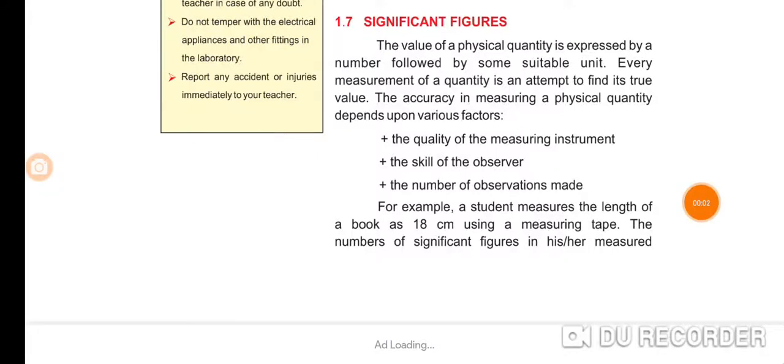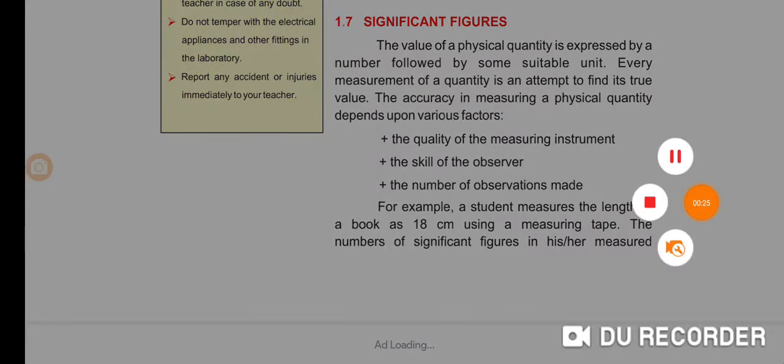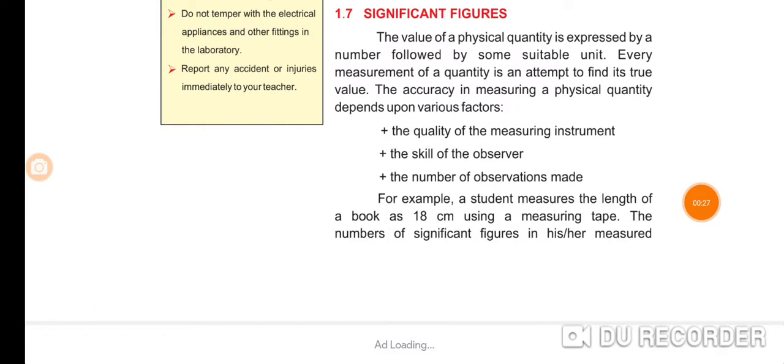Hello guys. Significant figures: the value of a physical quantity is expressed by a number followed by some suitable unit. Every measurement of a quantity is an attempt to find its true value. The accuracy in measuring a physical quantity depends upon various factors: the quality of the measuring instrument, the skill of the observer, and the number of observations made.